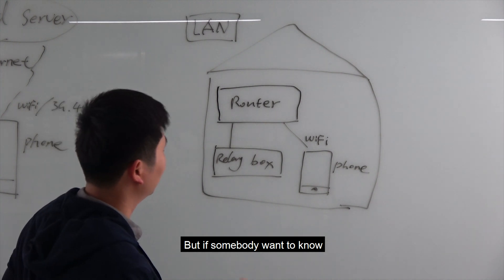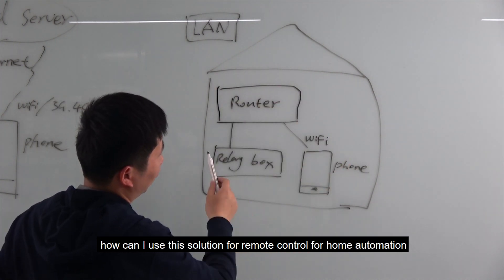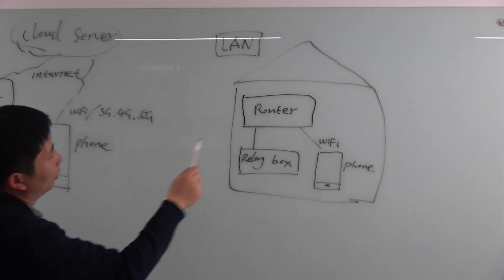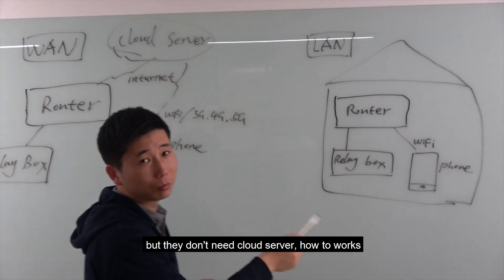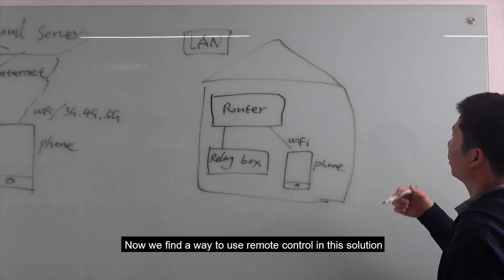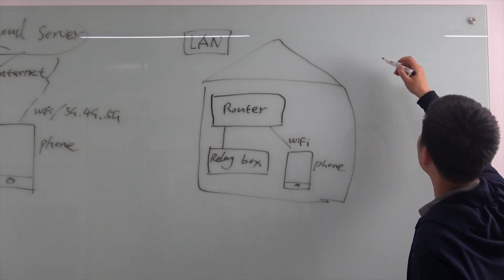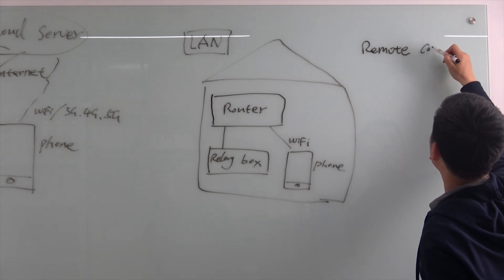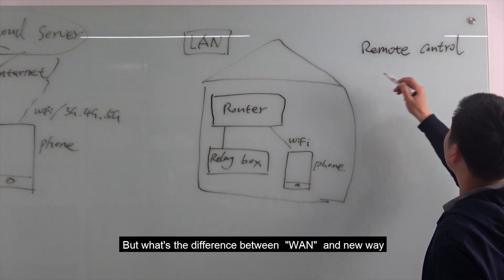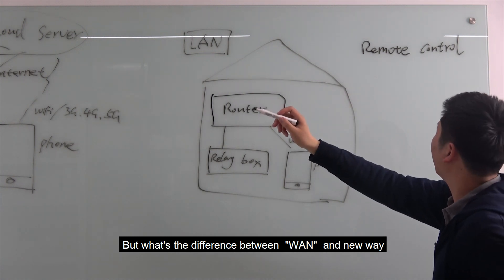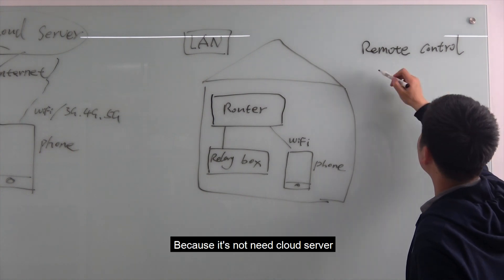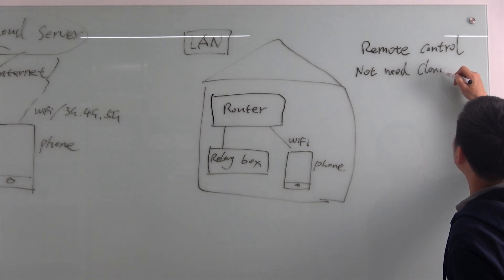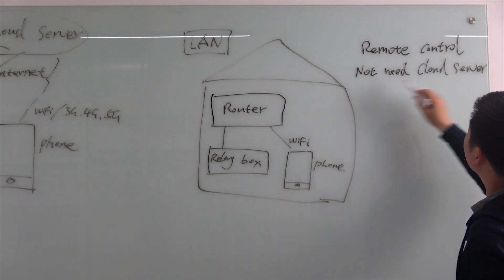But if someone wants remote control similar to the WAN solution, but without needing a cloud server, how does it work? We find a way to enable remote control in this local network setup. The key difference from the WAN approach is that no cloud server is needed.